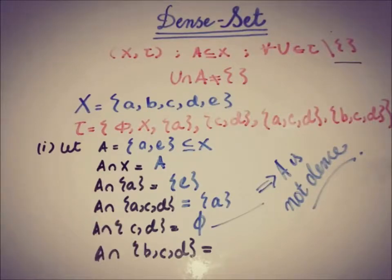If you take a subset A equal to X, then X is always a dense set, because X intersection with X is X, and X intersection with A is A.